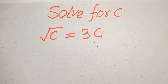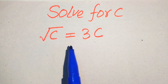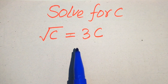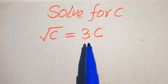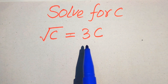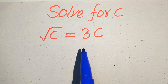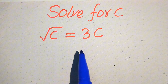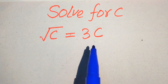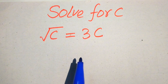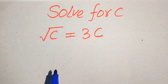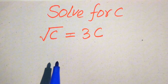Hello everyone. How to solve this problem for the values of c if we have square root of c equals 3 times c, and we solve this problem for all the values of c. First we find all the roots of this equation, and at the end we will verify which of the roots are solutions and which are extraneous roots.